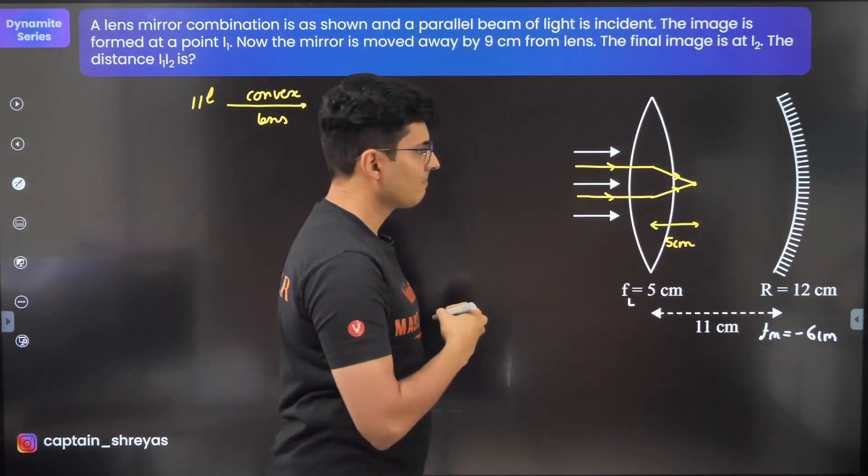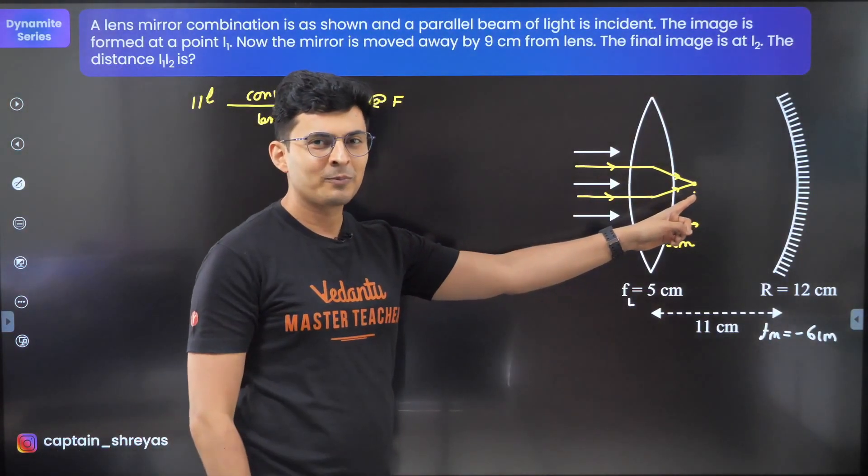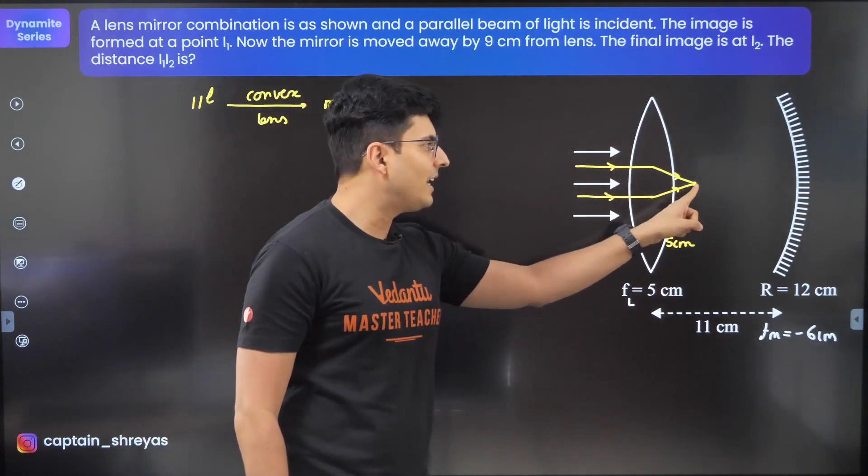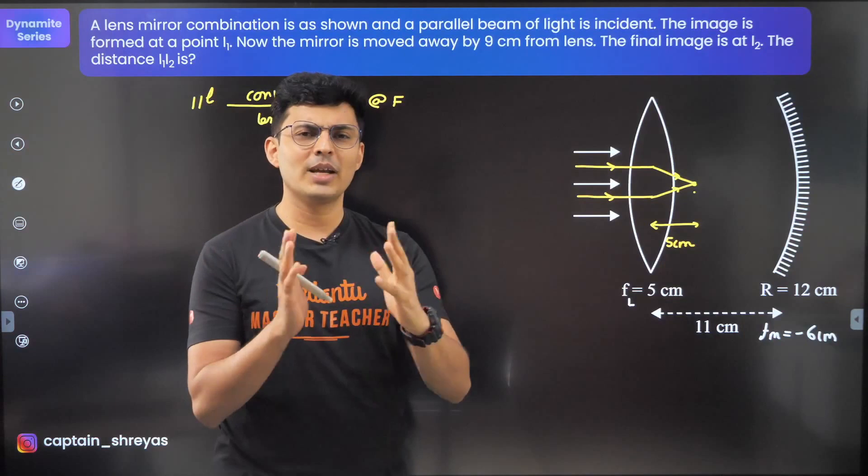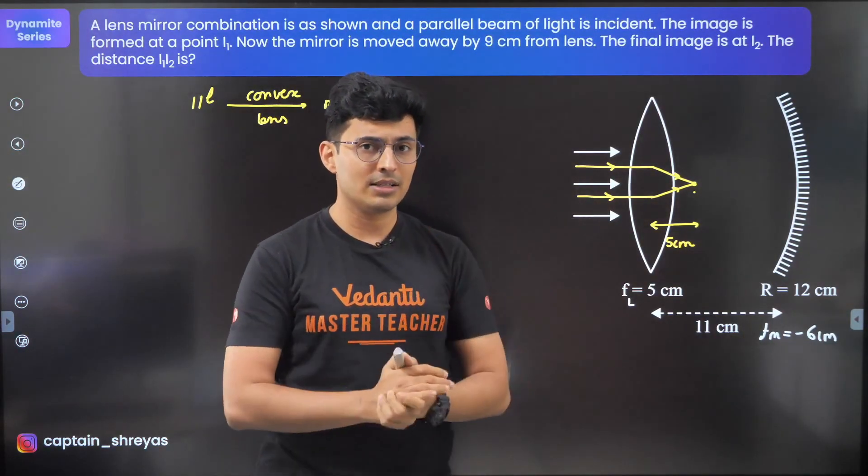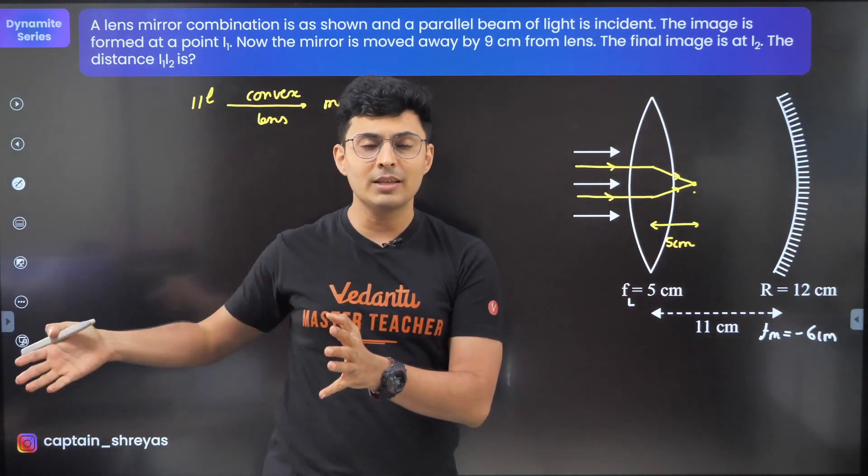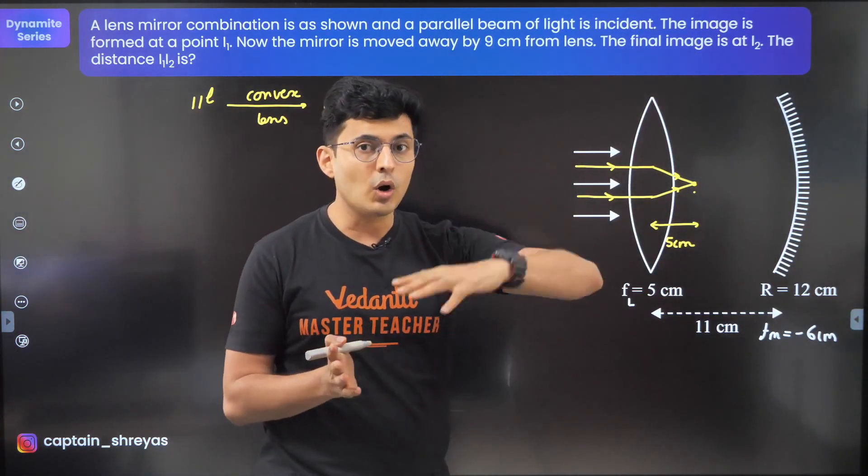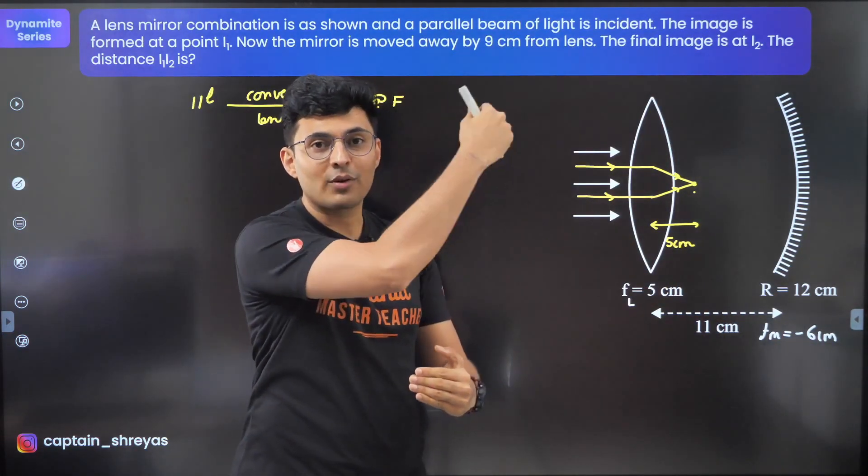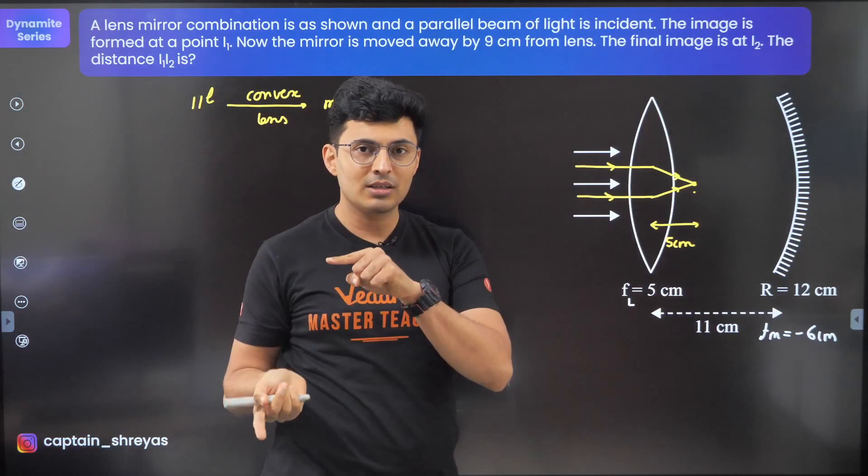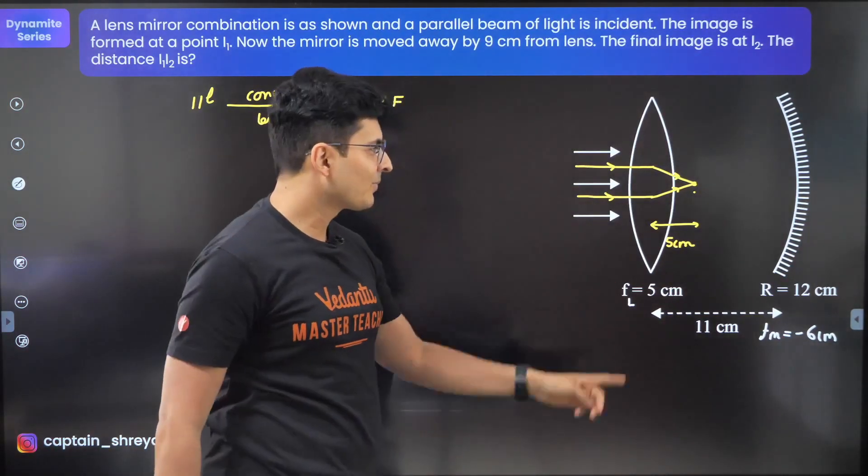After it meets here, that's a real image, and the image of the lens is the object for the mirror. Whenever multiple reflections or refractions are happening, if there is an image formed by something, that image becomes the object for the next thing. Image converts to object, produces image, becomes object.